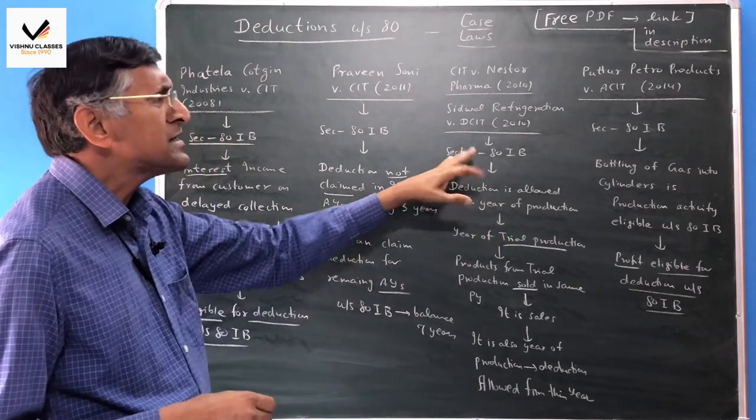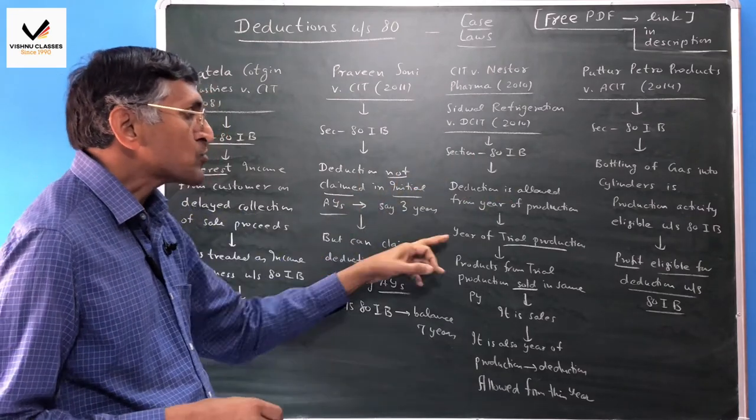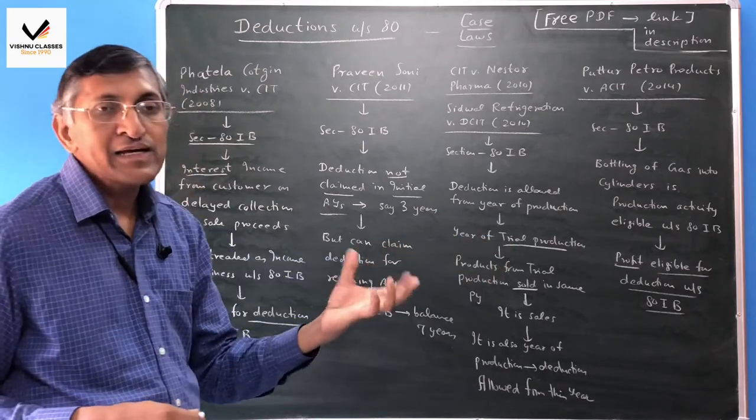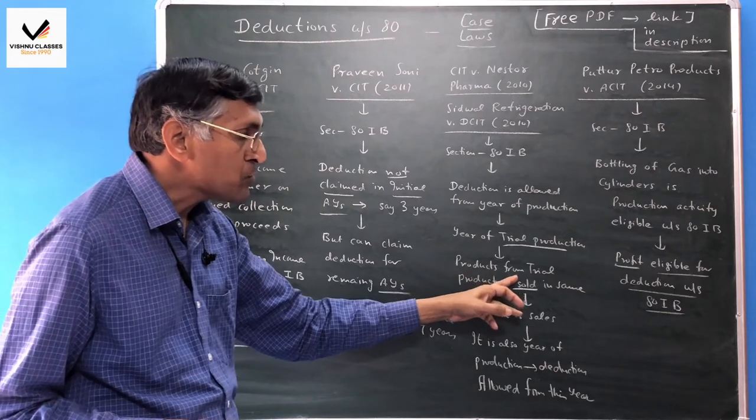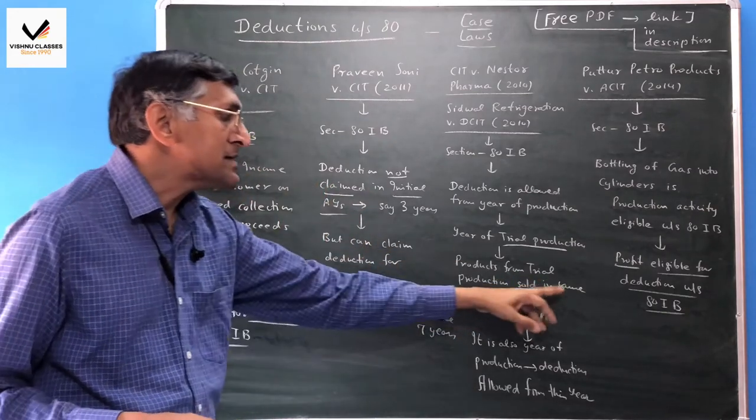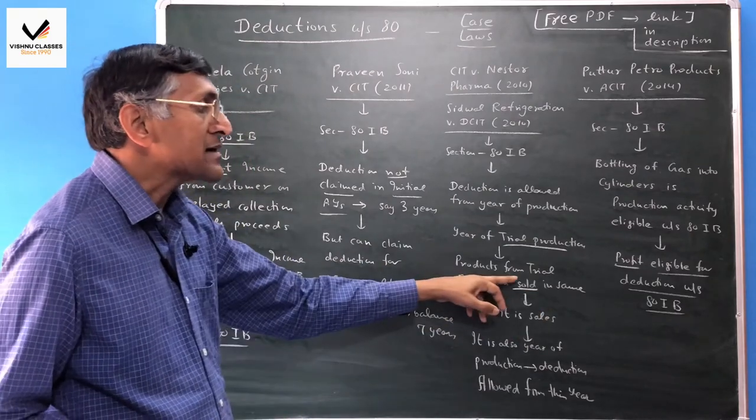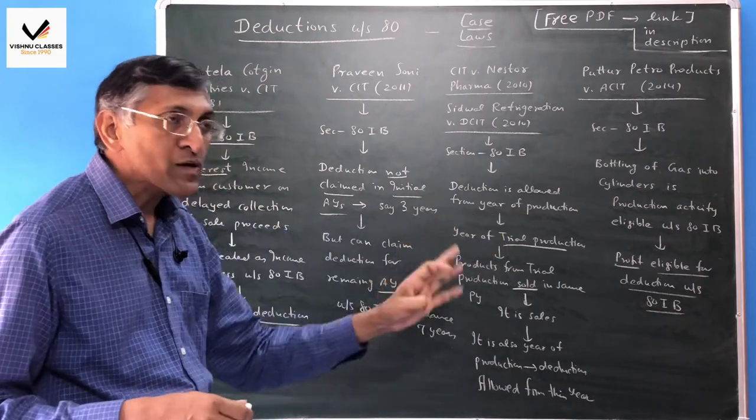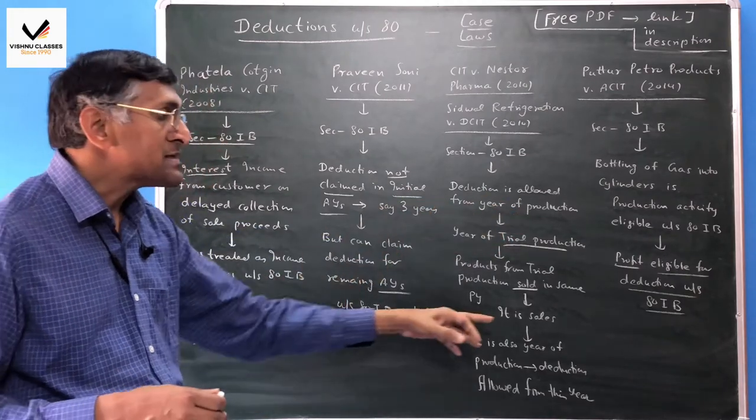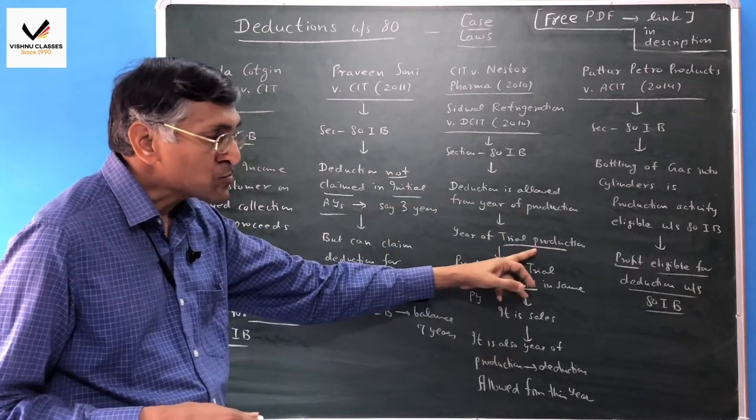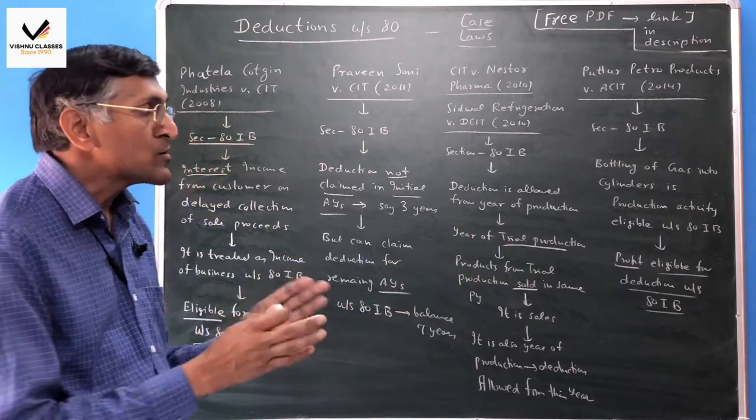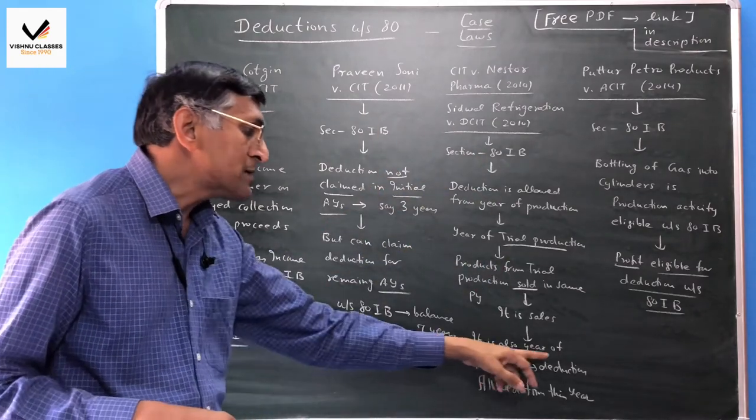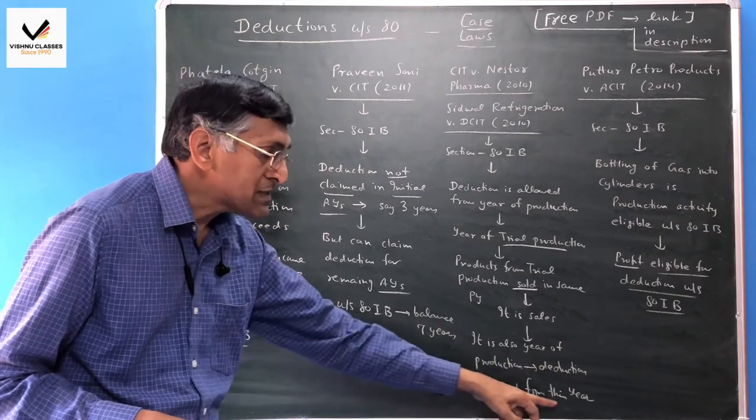This section is available from the year of commercial production. The question is, if the company has started a new business under section 80IA, there is trial production first. Commercial production is not the same as trial. In trial production, output is produced and sold. The deduction is allowed from the year of trial production. Therefore, if some output has been released from trial production and sold in the previous year, that is the year of commercial production.